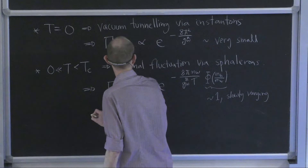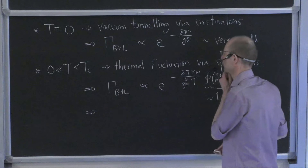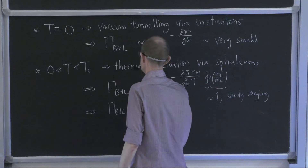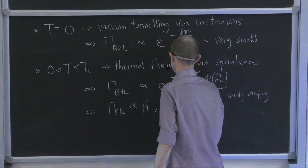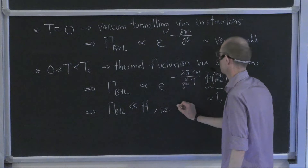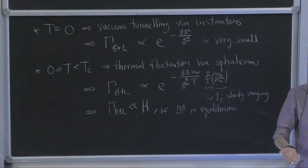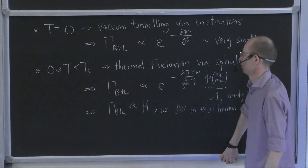We like to think of a phase transition situation where gamma_{B+L} is still less than the Hubble rate. In other words, these processes are not in equilibrium. They take place in principle, but so slowly that in practice they don't establish equilibrium.